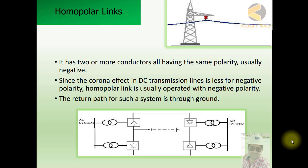It has two conductors or more than two conductors, but the difference here is in the bipolar we know that one conductor is positive, another conductor is negative, whereas in this homopolar our conductors are negative.